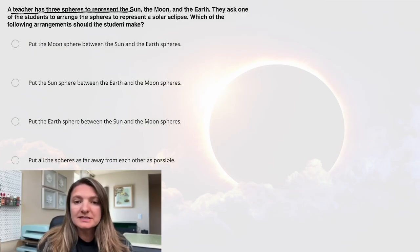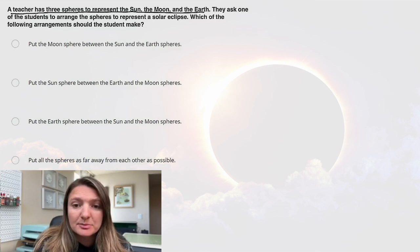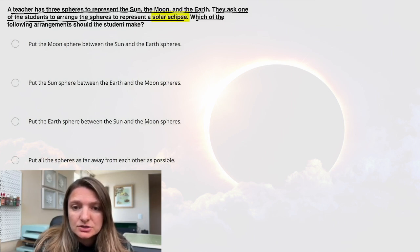Okay, question two. A teacher has three spheres that represent the sun, the moon, and the earth. They ask one of their students to arrange the spheres to represent a solar eclipse. Which of the following arrangements should the student make?